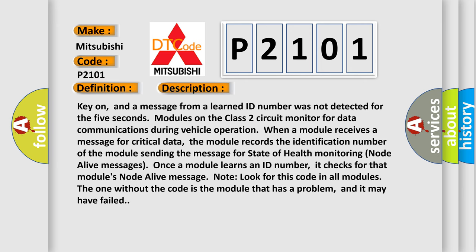Key on, and a message from a learned ID number was not detected for the 5 seconds. Modules on the class 2 circuit monitor for data communications during vehicle operation. When a module receives a message for critical data, the module records the identification number of the module sending the message for state of health monitoring node alive messages.